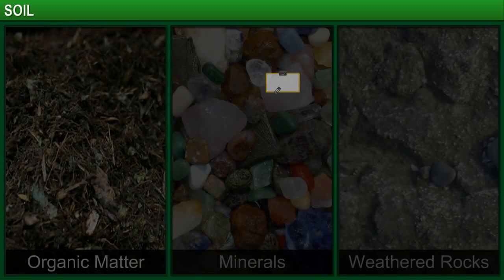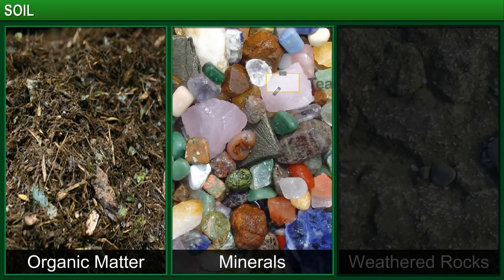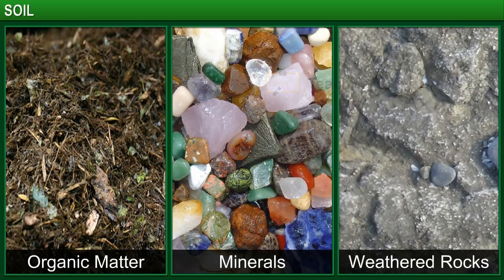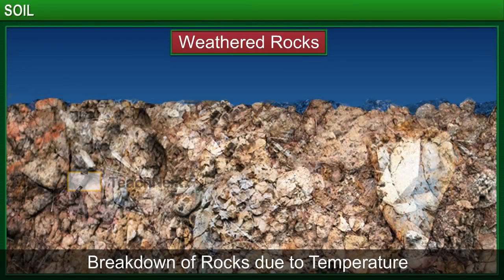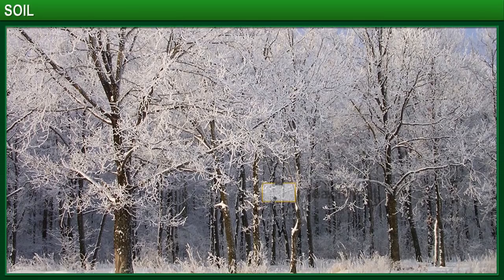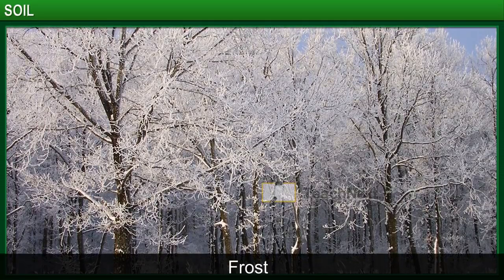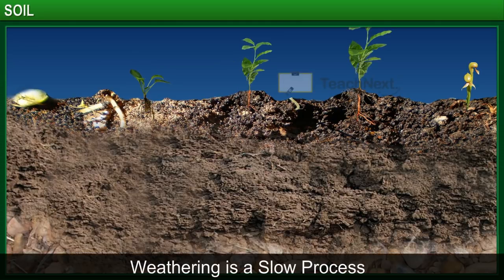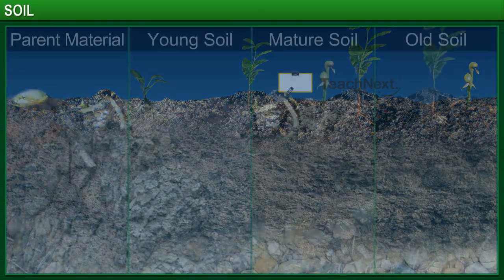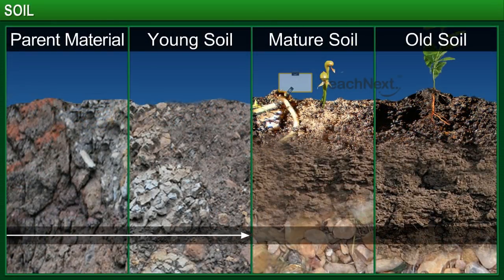What is soil made up of? Soil is made up of organic matter, minerals, and weathered rocks. Weathered rocks are a result of the breakdown and decay of rocks by changes in temperature, frost, and actions of living organisms. This process is very slow and is called weathering.